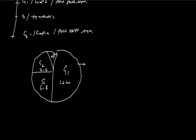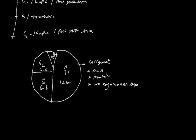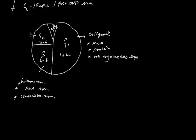Mainly in G1 stage, the cell grows in size. The formation of RNA takes place at this stage, and proteins are also formed, as well as cell organelles. In S phase, synthesis of histone proteins takes place. DNA also synthesizes at this stage, and the centrioles are also synthesized at this stage.